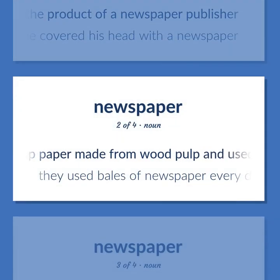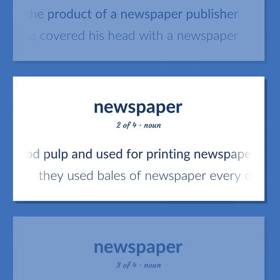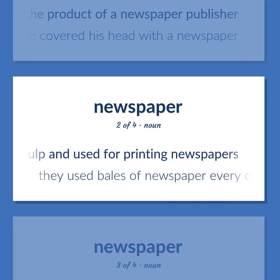Newsprint (noun): Cheap paper made from wood pulp and used for printing newspapers. Example: They used bales of newsprint every day.